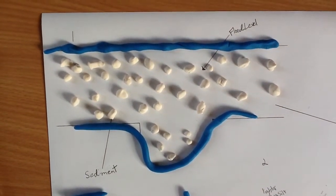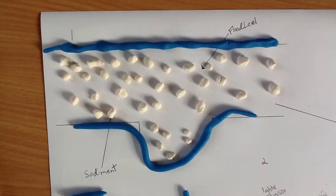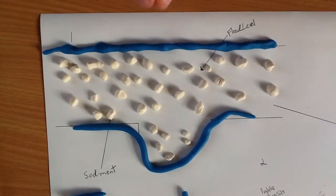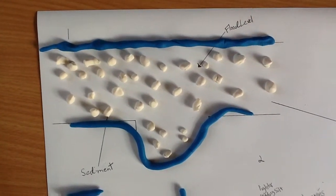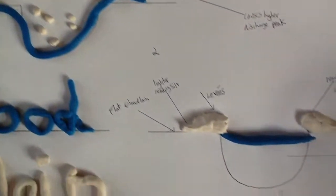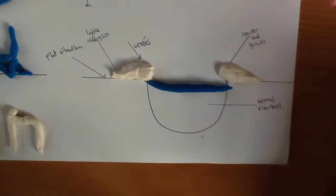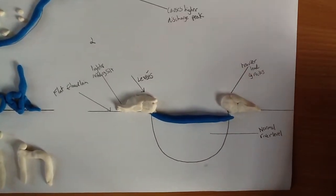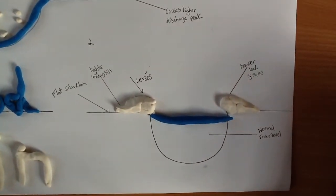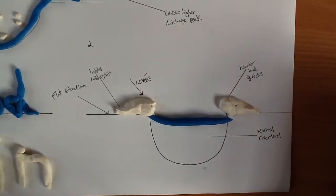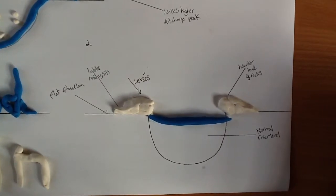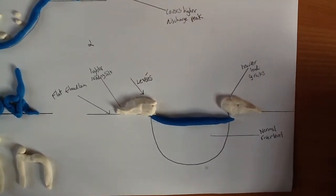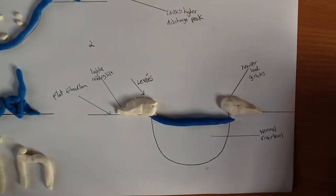This then will cause natural levees and higher discharge that will lead to number two. When the water returns to natural levels and the water goes down, natural levees are formed on the side of the river that will stop future flooding.